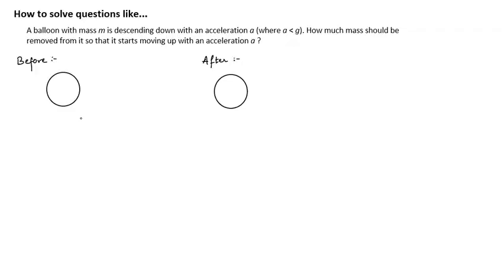Welcome to a new video. Today we will solve a question that says: a balloon with mass m is descending down with an acceleration a, where a is less than g, and g is the acceleration due to gravity. How much mass should be removed from the balloon so that it starts moving up with an acceleration a?